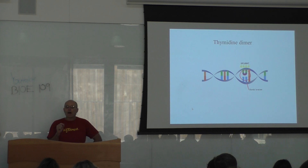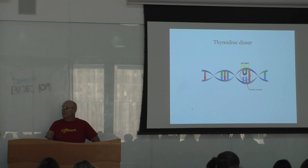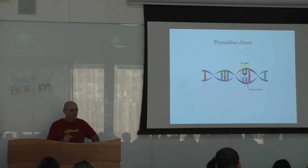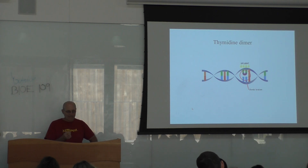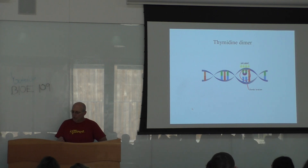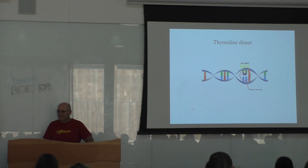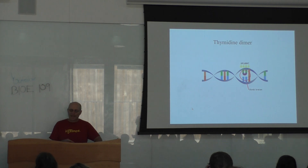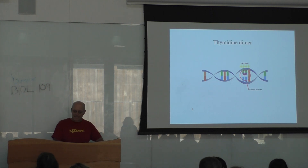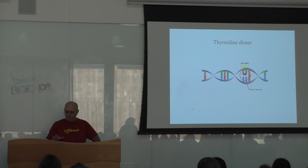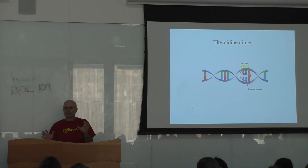Mutations are what happens when DNA is modified. The most classic example of that is UV light.